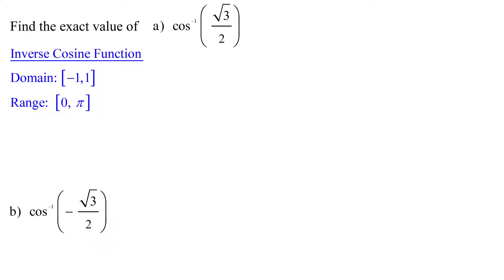Quickly reviewing the inverse cosine function, the input values of the domain are real numbers in the interval negative 1 to 1, including the endpoints, and the output values, or the range,